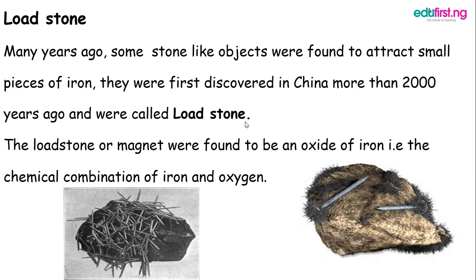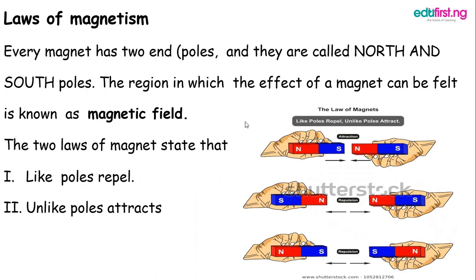Some non-magnetic materials are copper, aluminum, lead, zinc, wood, plastic, rubber, etc. Many years ago, some stone-like objects were found to attract small pieces of iron. They were first discovered in China more than 2,000 years ago and were called loadstones.